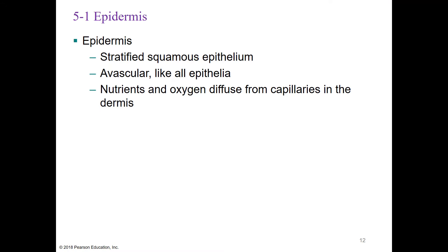The epidermis is made of stratified squamous epithelium. Stratified means many layers; squamous means thin and flaky; epithelium lines or covers internal and external body surfaces. It is avascular—no blood vessels in it—which is true for all epithelia. Nutrients and oxygen must diffuse into the epithelium from capillaries in the dermis, which is below the epidermis.